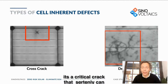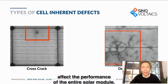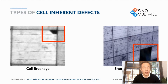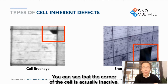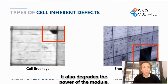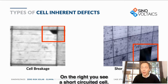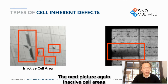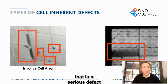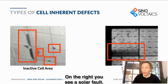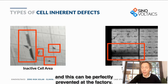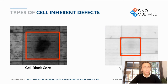The dendritic crack is a critical defect that can affect the performance of the entire solar module. On the left, cell breakage — you can see the corner of the cell is now inactive, which degrades the module's power. On the right, a short-circuited cell. On the next picture, inactive cell areas — serious defects degrading module power. On the right, a solder fault, which happens during manufacturing and can be prevented at the factory.